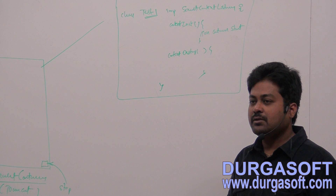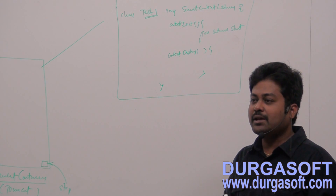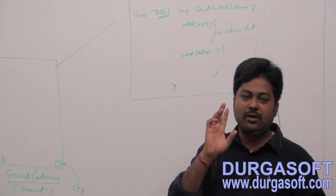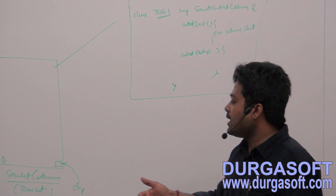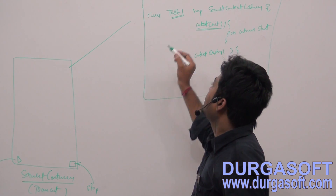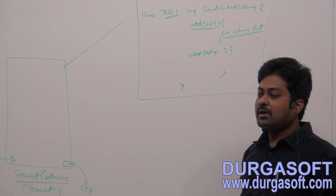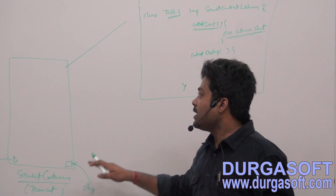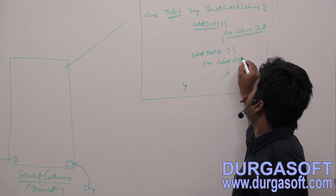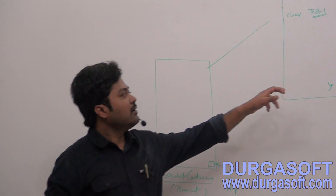Similar to load-on-startup servlets, this listener class object is created at the time of container startup, and only one object is created for the entire application. When you call start, it will instantiate your listener class, and along with instantiation, it will call the contextInit method. On container startup, it will execute this method. When you call stop and shut down your container, it will call the contextDestroy method — on context close or stop methods, contextDestroy is called.